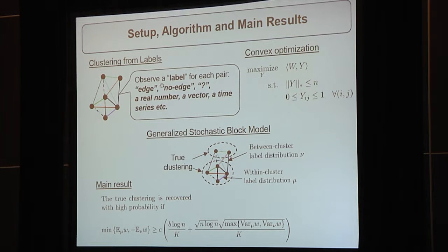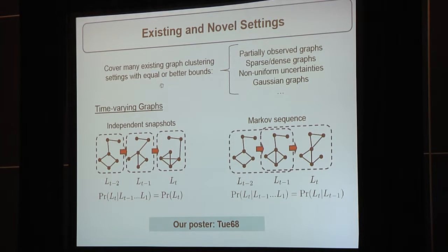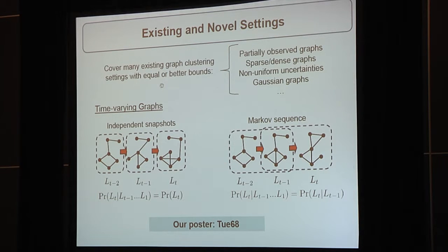In some cases, we provide a matching necessary condition indicating the optimality of the algorithm. Our results cover many existing graph clustering settings, and they also apply to new settings. In particular, we can derive results for time-varying graphs, both for the simple case of independent snapshots and also a more complex case such as a Markov sequence of snapshots. These provide new insights on how the information gained from additional snapshots influences the performance of graph clustering. Please come to our poster, number 68. Thank you.